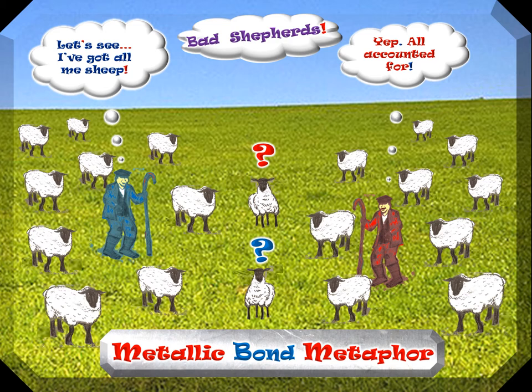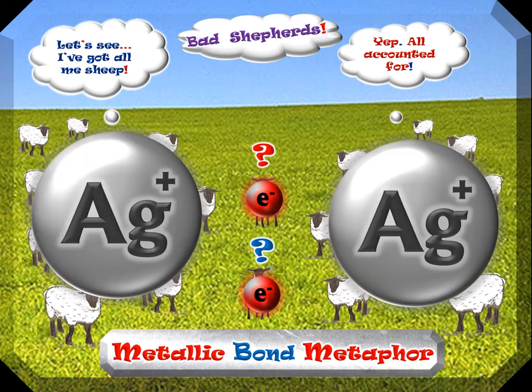Imagine the sheep are the electrons. Metals have most of their electrons close in, but the outer electrons — the valence electrons — it's hard to say which atom they belong to. Let me replace them with silver ions. Silver has a positive one cationic charge, so it's missing an electron. If you draw a bigger circle to include one of those electrons, you've turned the silver back into an atom. But which silver atom do those electrons belong to? The silver atoms don't know, and the electrons don't know. That's what a metallic bond is like.